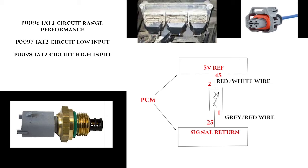So right now we're going to start with P0096. You're going to first start out by clearing the code and then running tests again to see if it comes back. If P0096 is the only code that comes back, then that is most likely your problem. If you're getting other codes, you could be having multiple things going on, but today we're just going to focus on P0096 as your main code.